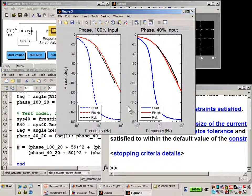Now we have our results. The red line is the frequency response generated by the model with the optimized parameters. And we can see that it is much closer to the characteristics from the data sheet.